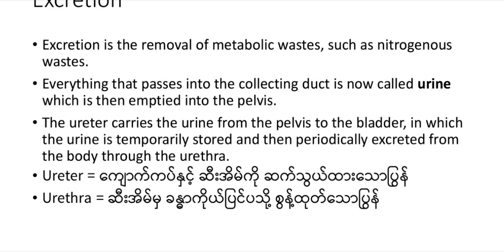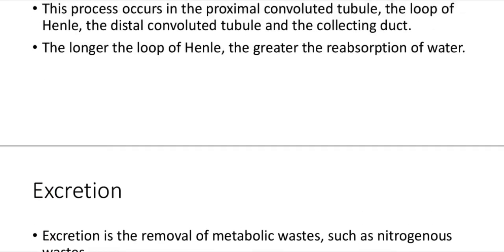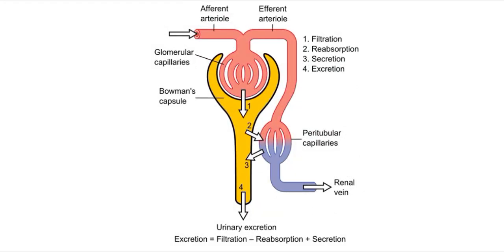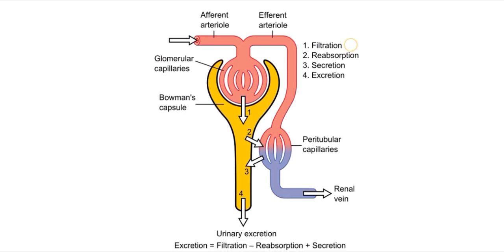The four processes of osmoregulation in the nephron are filtration, secretion, selective reabsorption, and excretion. This completes the overview of the topic.